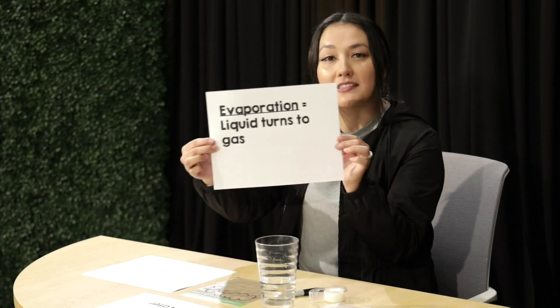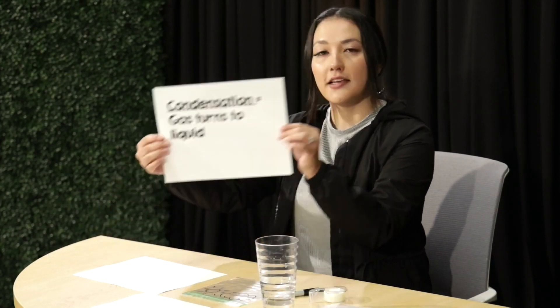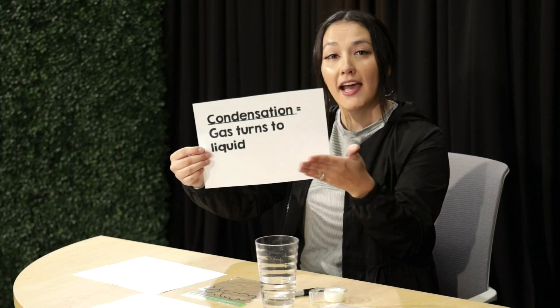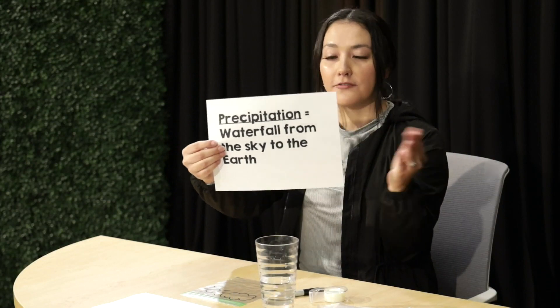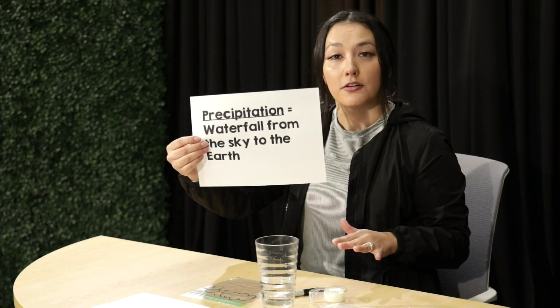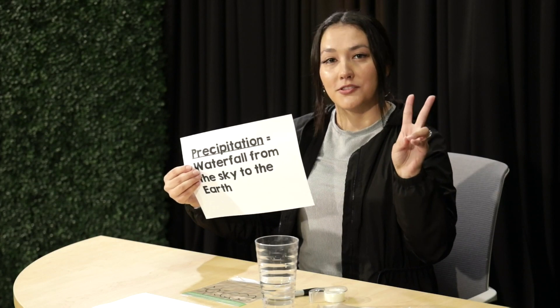The first key word is evaporation — when a liquid turns into a gas. The second is condensation — when a gas turns back into a liquid. And last, precipitation — when water falls back down to the earth. This can also happen through hail or snow.